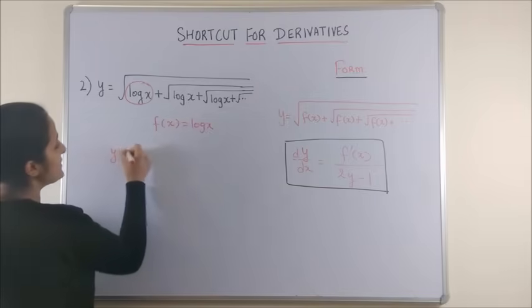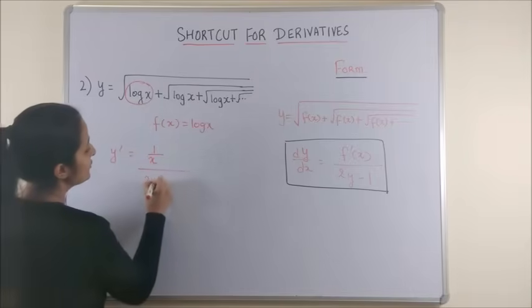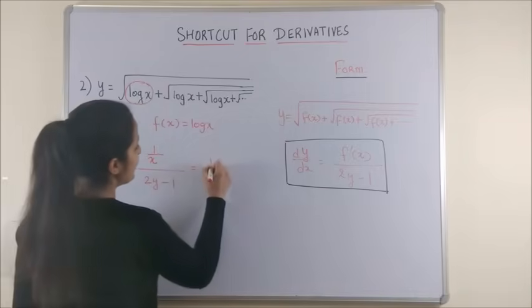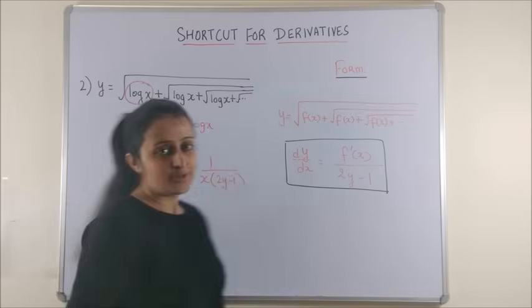The derivative simply becomes derivative of this function which is 1 by x upon 2y minus 1. On taking the LCM you get 1 upon x into 2y minus 1. Super simple.